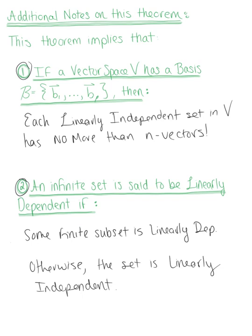To verify this, if S is an infinite set in vector space V, we can take any subset and define it with vectors u_1 through u_p such that p is greater than n, and use the same proof just completed to show that if a subset is linearly dependent, then so is the set S.